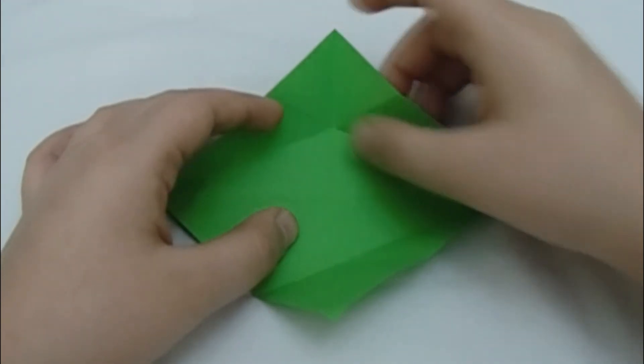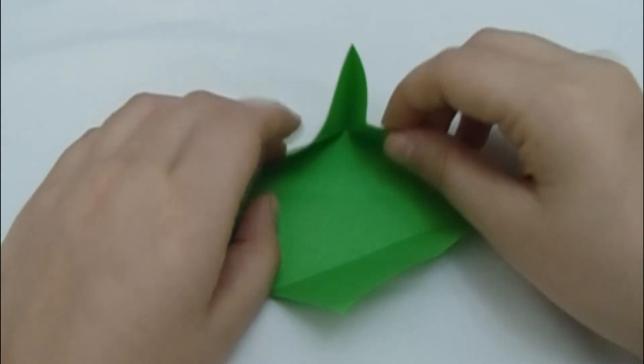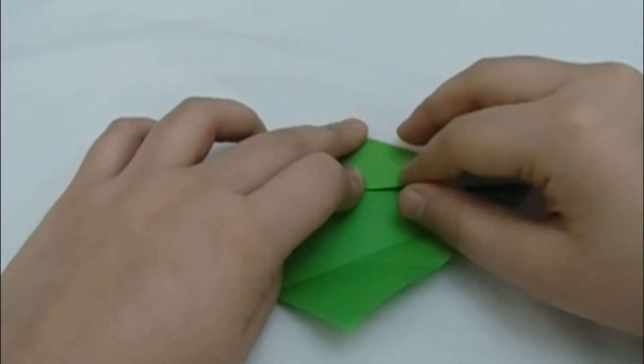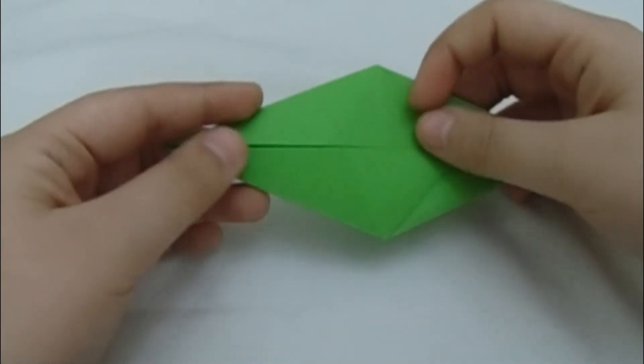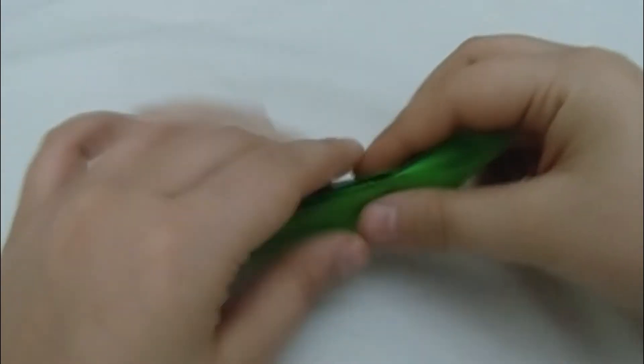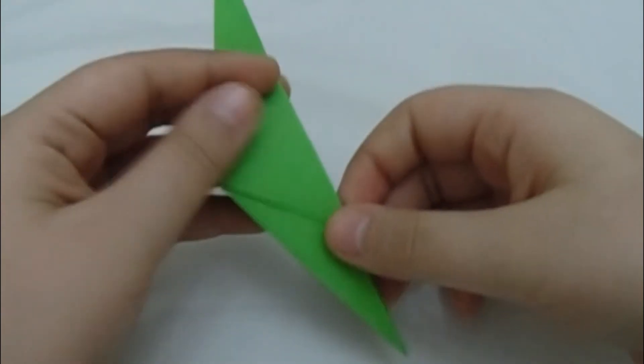And now just flatten it out to one side, just like this. Now do the same thing here. You've got this now. So if you fold this in half, you can already see that these are going to be the wings and this is going to be the tail.